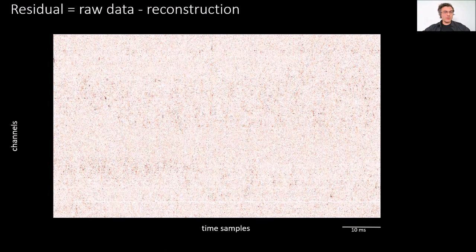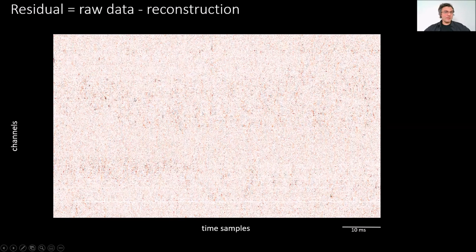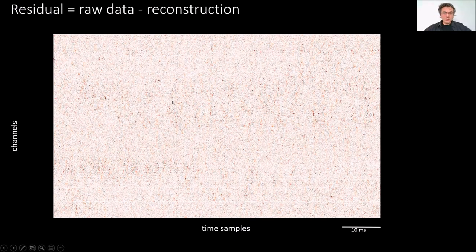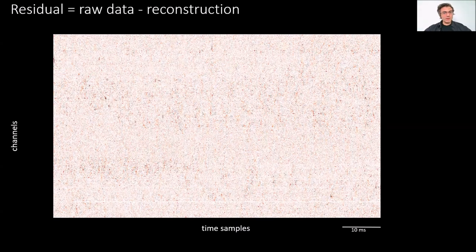You'll also be able to see the residual of the reconstruction — what's left when you subtract the reconstruction from the raw data. This is useful for picking out when the algorithm doesn't work so well: it might leave stuff in this residual that you could identify as spikes from neurons that weren't captured. In the GUI, you'll be able to zoom in and look more closely at individual events to see exactly how the subtraction worked.